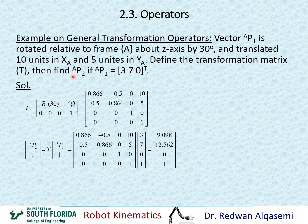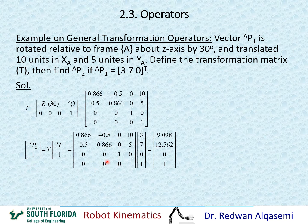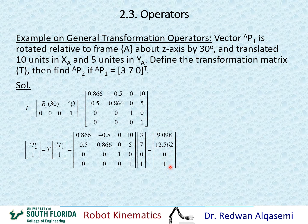Now we can define P2 relative to A. P2/A and 1 equals the transformation matrix just found, times P1/A — which is [3, 7, 0] — and 1, for dimensional consistency. This is a four-by-four times four-by-one multiplication. Substituting the values gives the result [9.098, 12.562, 0, 1]. Taking the first three elements and disregarding the last gives the final answer: P2 relative to A equals [9.098, 12.562, 0] transpose.